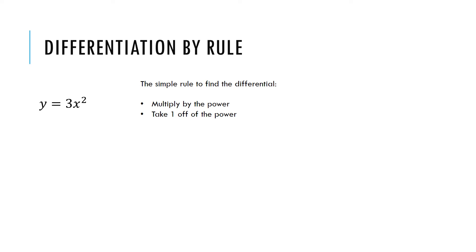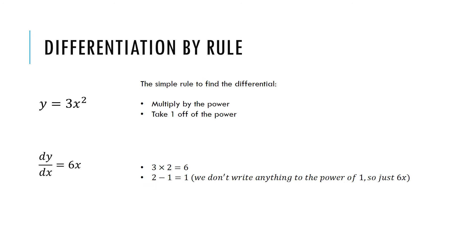The simple rules to find the differential of a simple function are: multiply by the power and take one off the power. So let's have a look — y equals 3x squared. The differential of y equals 3x squared is 6x. I got that by first multiplying the powers: 3 times 2 is 6. Then I take one off the power — the power is 2, so 2 minus 1 equals 1. We just write x because we don't write anything to the power of 1. So the differential of y equals 3x squared is 6x.